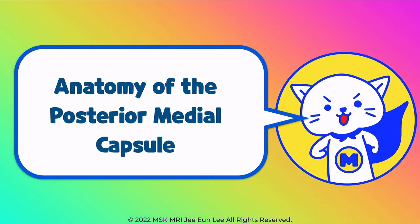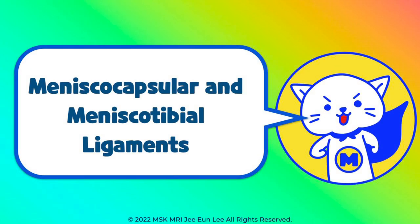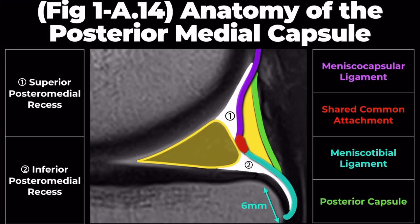Anatomy of the Posterior Medial Capsule: On a sagittal image, the medial meniscus posterior horn's two main peripheral attachments are highlighted. The meniscocapsular ligament is marked in purple, extending posterior superiorly to the capsule.